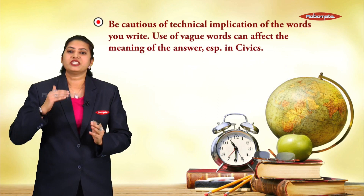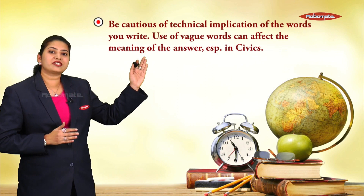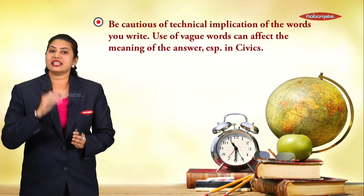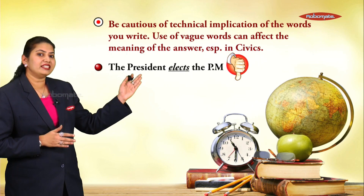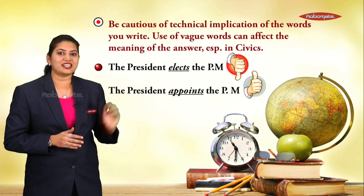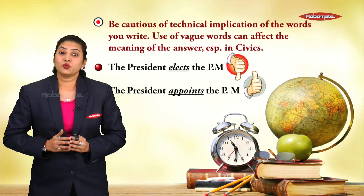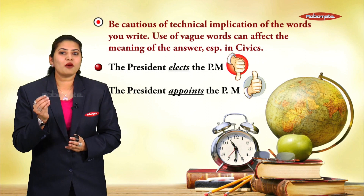Be cautious of the technical implications of the words you write. Usage of vague words can affect the meaning of your answer, especially in civics. For example: 'The president elects the prime minister' versus 'The president appoints the prime minister' — of course the second one is correct. Words like elect, select, choose, nominate, and appoint cannot be used interchangeably.